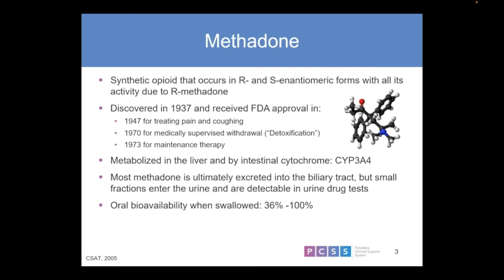Methadone is metabolized in the liver and by intestinal cytochrome 3A4. Most methadone is ultimately excreted in the biliary tract, but small fractions enter the urine and are detectable in urine drug testing. It is a synthetic, so you're not going to pick it up on a standard opiate screen — you have to ask for methadone specifically.